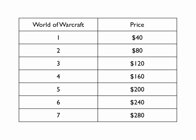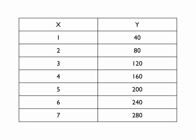And when you're doing algebra, basically what you're doing is you're getting rid of World of Warcraft and price, and you're putting in X for the World of Warcraft, because that's the amount of games you're buying, and then you're putting in Y for the price. So you have X and Y.